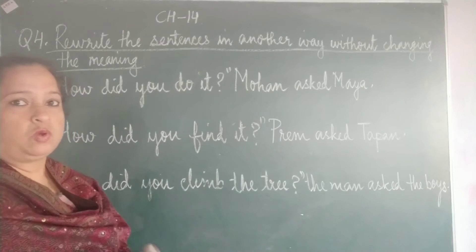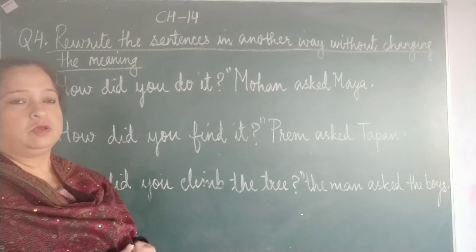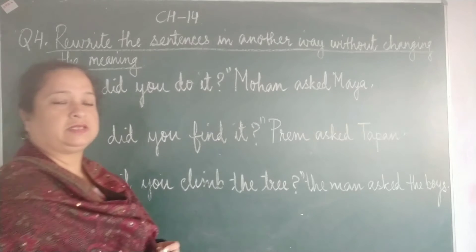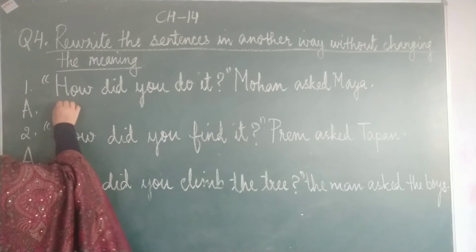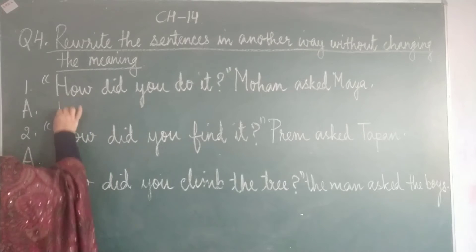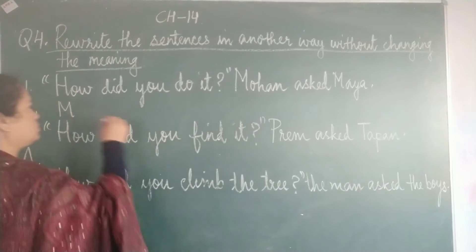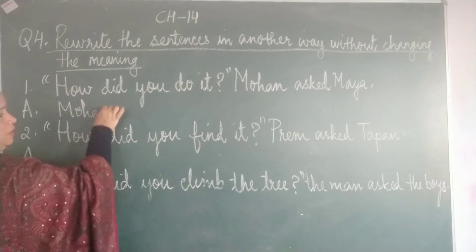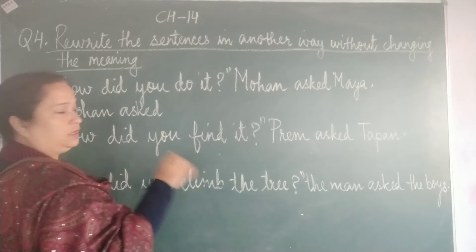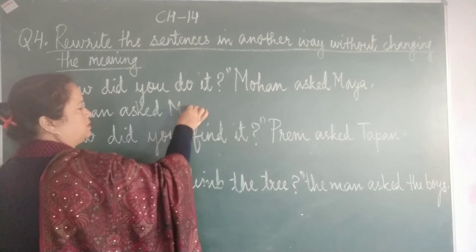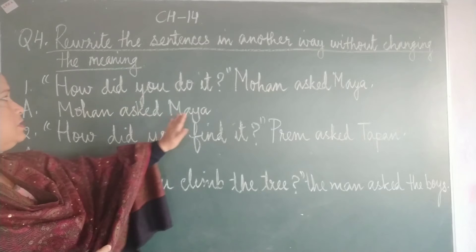He is asking. So what is he asking? He is asking how Maya did it. While writing the answer, we change the verb to the past tense form. So let us start by writing the answer. First of all we will write who is saying this sentence or this question. So Mohan. Now what did Mohan do? He asked. Who did he ask? He asked Maya. Since Maya is the receiver of the action, Mohan asked Maya.